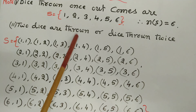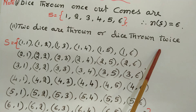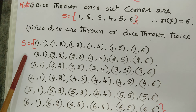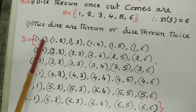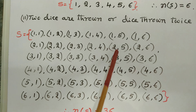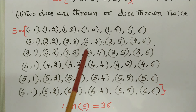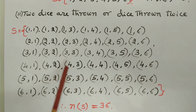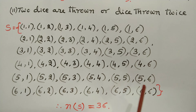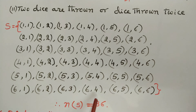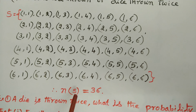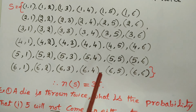Now, two dice are thrown — that is, a dice thrown twice. The set of all possible events is: (1,1), (1,2), (1,3), (1,4), (1,5), (1,6), (2,1), (2,2), (2,3), (2,4), (2,5), (2,6), (3,1), (3,2), (3,3), (3,4), (3,5), (3,6), (4,1), (4,2), (4,3), (4,4), (4,5), (4,6), (5,1), (5,2), (5,3), (5,4), (5,5), (5,6), (6,1), (6,2), (6,3), (6,4), (6,5), (6,6). In this way, 6 × 6 = n(S) = 36 total possible events.